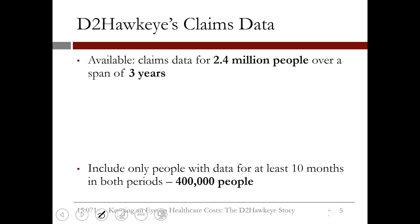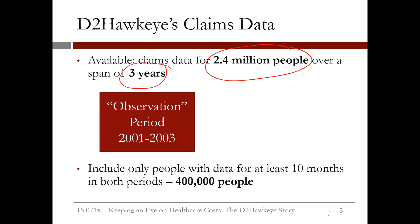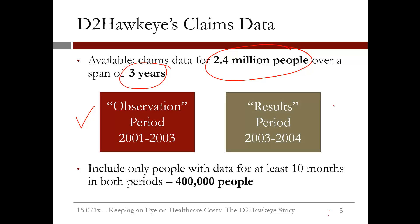The specific exercise we are going to see in this lecture is an analytics approach to building models, starting with 2.4 million people over a three-year span. The observation period was 2001 to 2003, and then out of sample, we make predictions for the period 2003 to 2004. This was in the early years of D2 Hawkeye. Out of the 2.4 million people, we included only people with data for at least 10 months in both periods — both in the observation period and the results period. This decreased the data to 400,000 people.